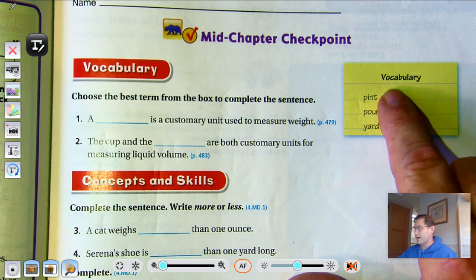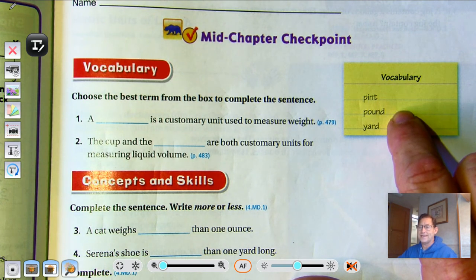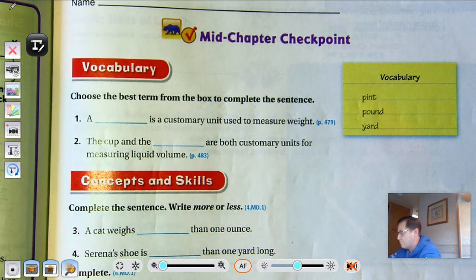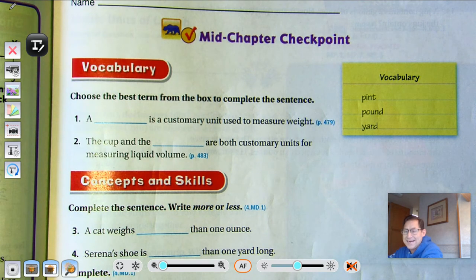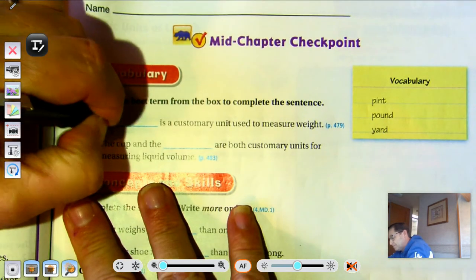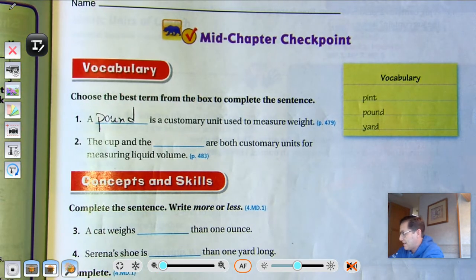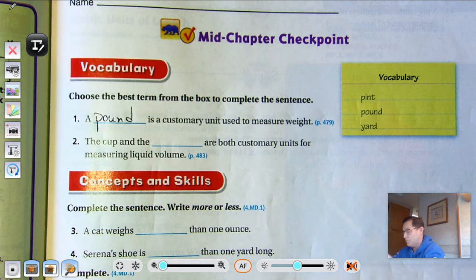Okay, well, pints are liquid volume, pounds are weight, and yards are distance. So a blank is a customary unit used to measure weight - pound. The cup and the blank are both customary units for measuring liquid volume - pints.